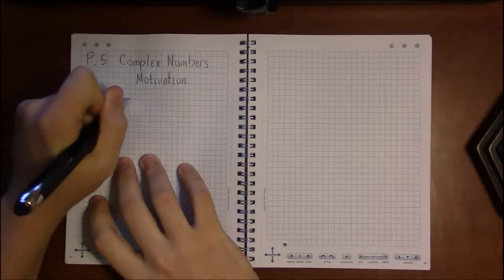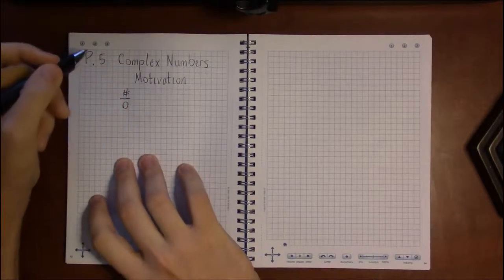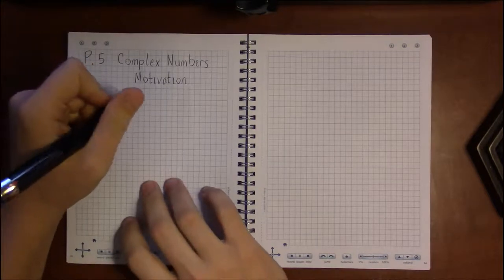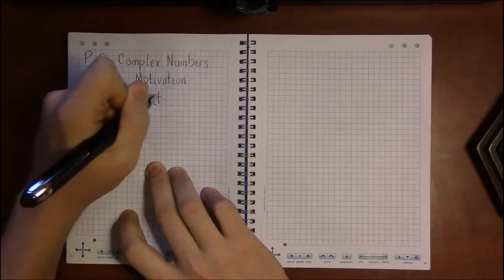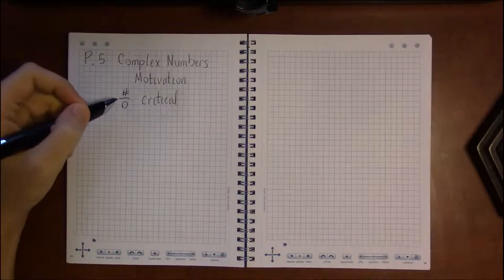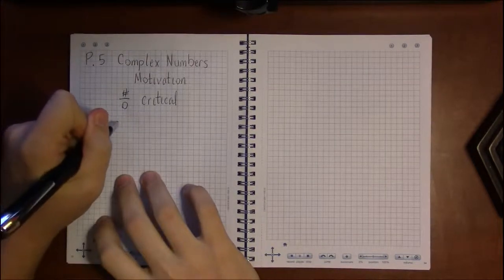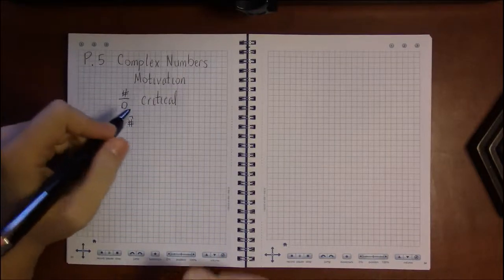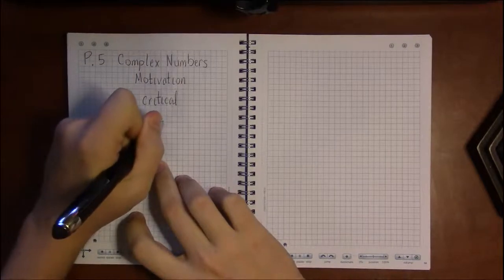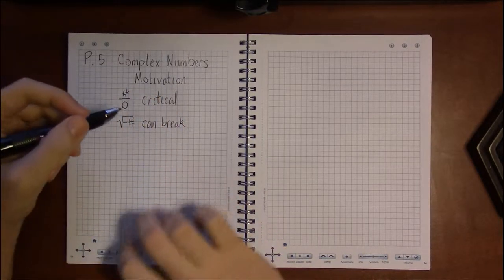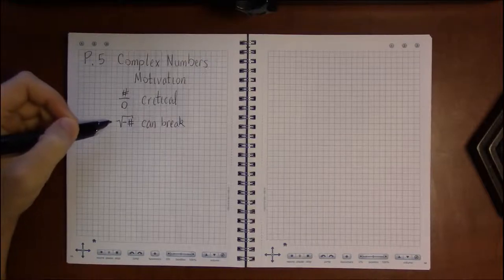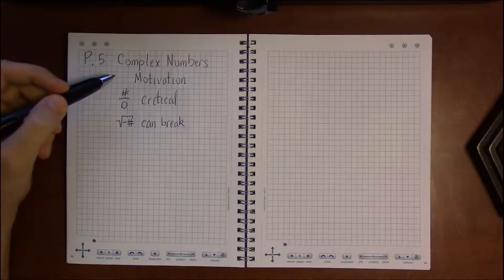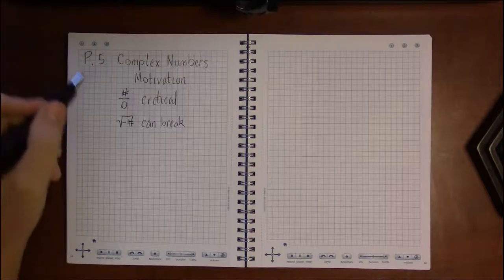One rule you might be tempted to break is dividing by zero, but breaking that rule breaks everything — it's a critical rule for mathematics. The other thing we're not allowed to do is take square roots of negative numbers, and it turns out we can break this rule without breaking everything. In fact, what we get are complex numbers, which is actually the right way to view algebra.